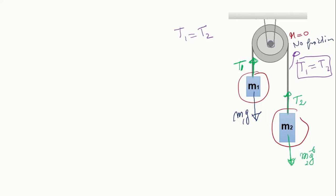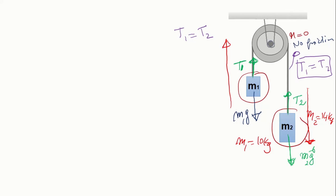Now let's start with object one. We need to know the direction of motion of object one — where it should go. We look at the masses: m2 is 14 kilograms and m1 is 10 kilograms, which means the direction of motion of object one will be upward and object two will go down. We sketch the direction of these forces. In general, to see the direction of forces clearly, you shrink the object to a point so you can see the force directions clearly.